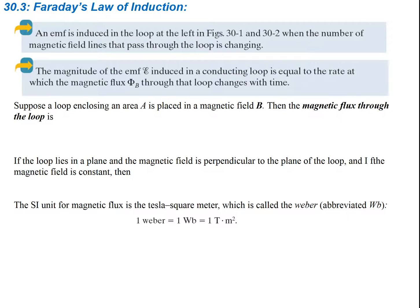Let's look at Faraday's Law of Induction. An EMF is induced in a loop when the number of magnetic field lines passing through the loop is changing — in other words, when the flux is changing. The magnitude of the EMF induced in a conducting loop is equal to the rate at which the magnetic flux through the loop changes with time. When our flux changes with time, that gives us the induced EMF.